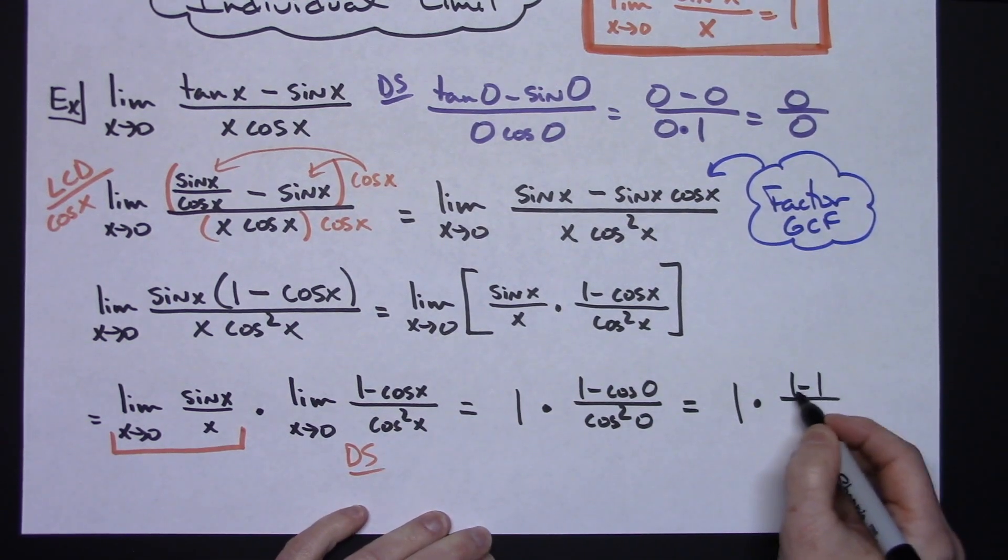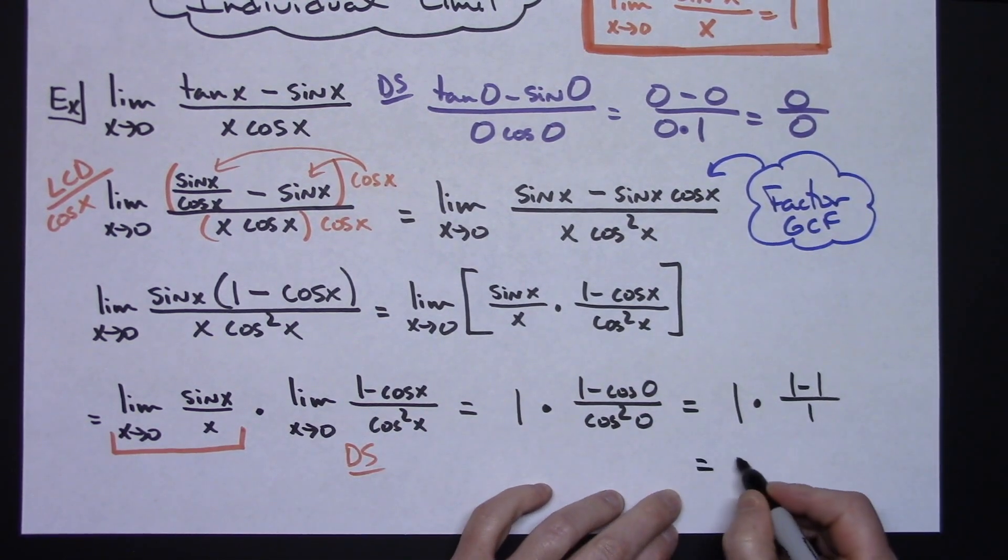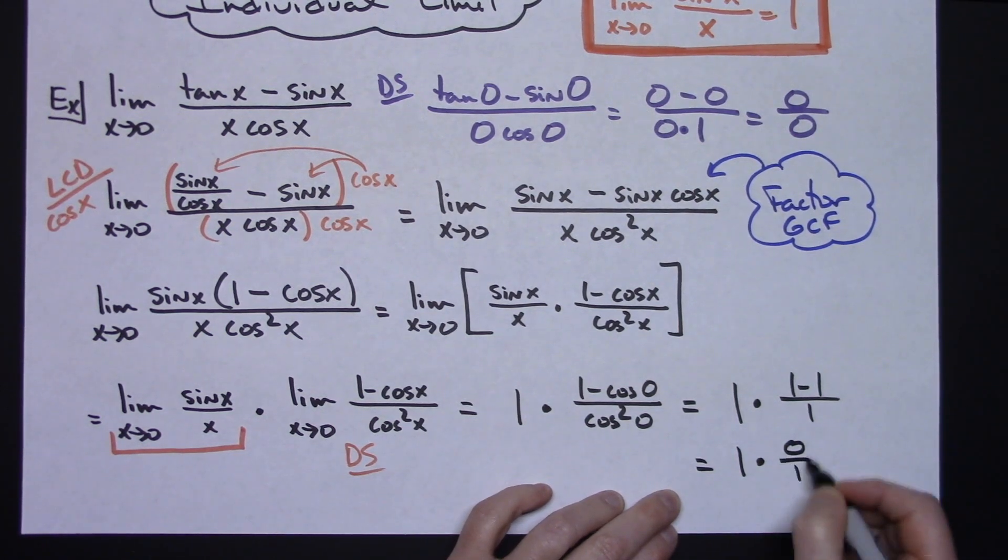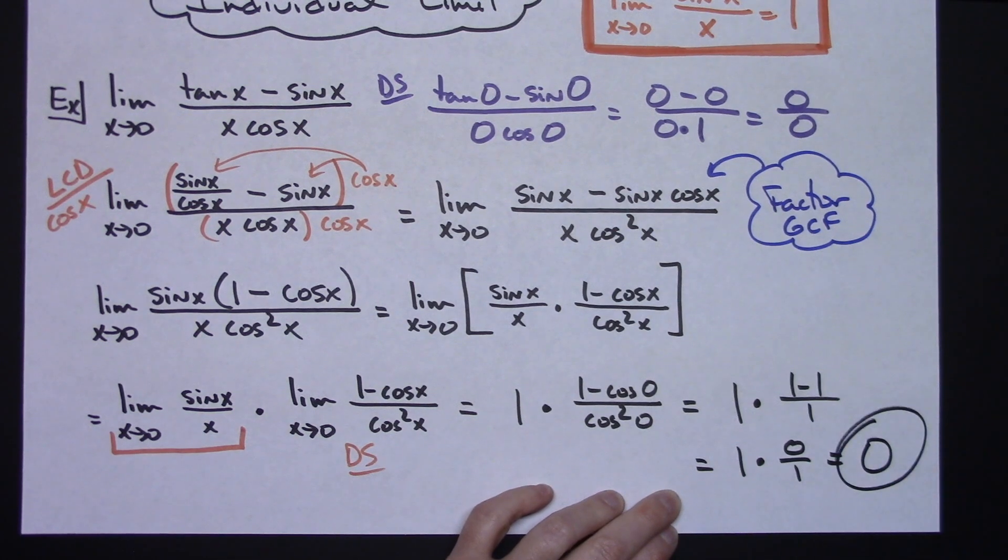1 minus 1 gives me 0, so 1 times 0 over 1, this is 0 times 1, giving me an overall limit of 0.